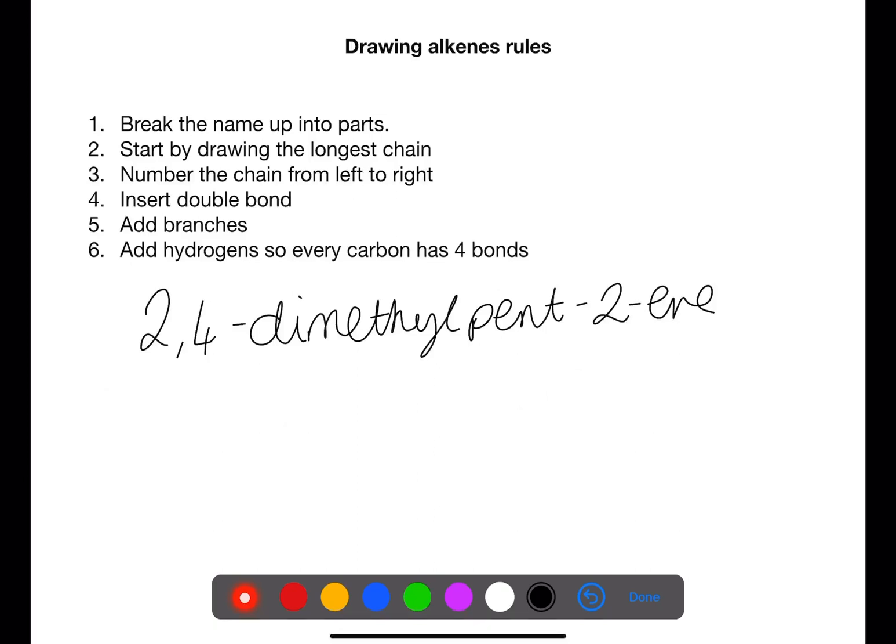When drawing branched chain alkenes, it is always best to break the name up into different parts. Start by drawing the longest chain. This is at the end of the name.